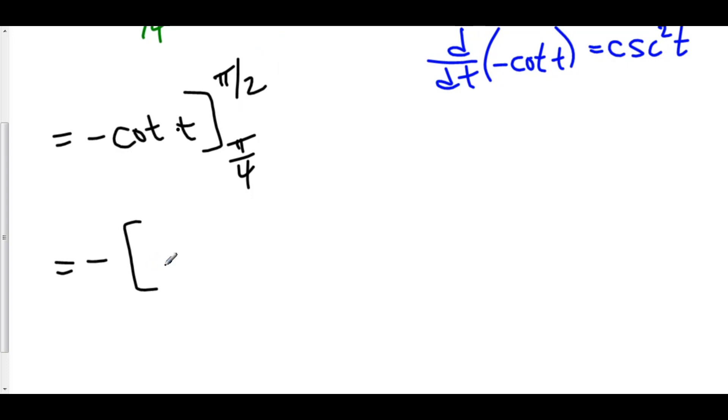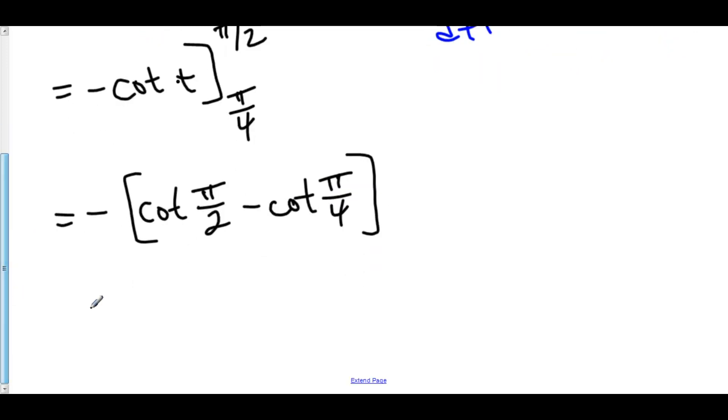So, let's plug in that π/2. We've got cotangent of π/2 minus cotangent of π/4. Now let's figure out what cotangent of π/2 is. We've got negative in front. Cotangent is cosine over sine. Cosine of π/2 over sine of π/2.